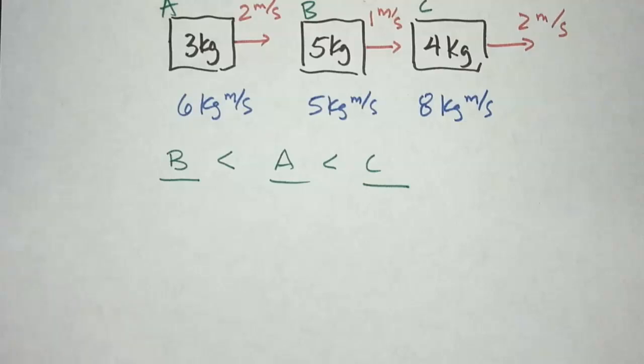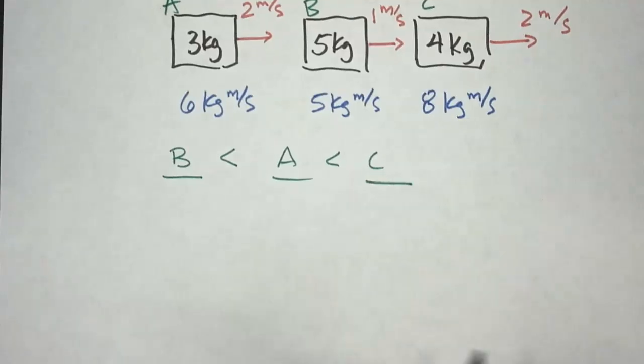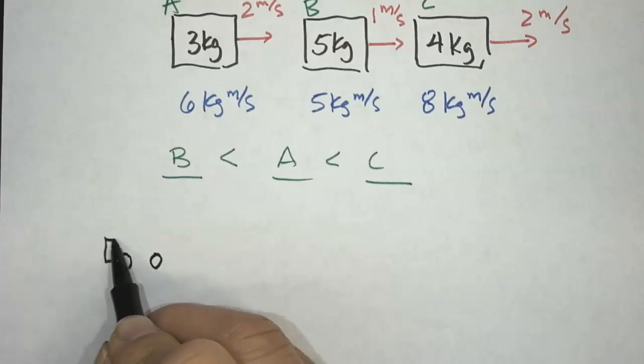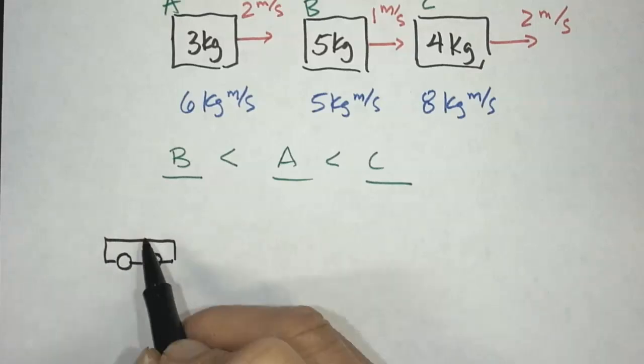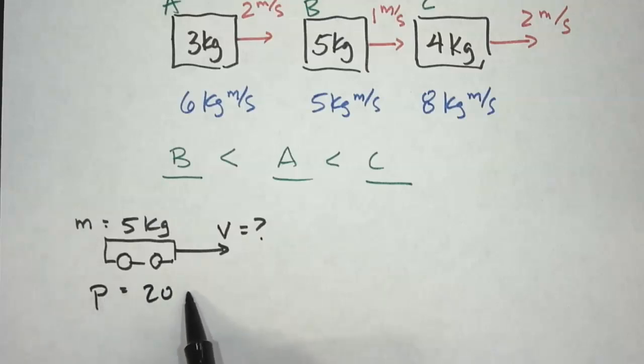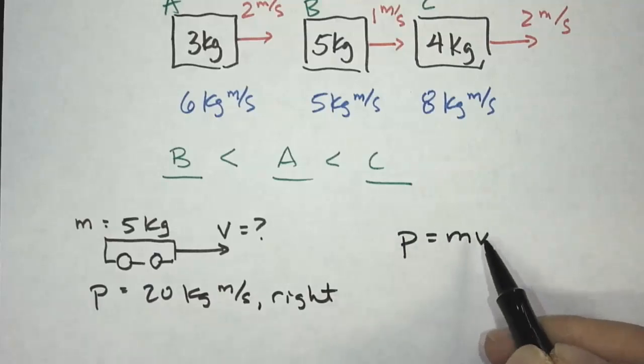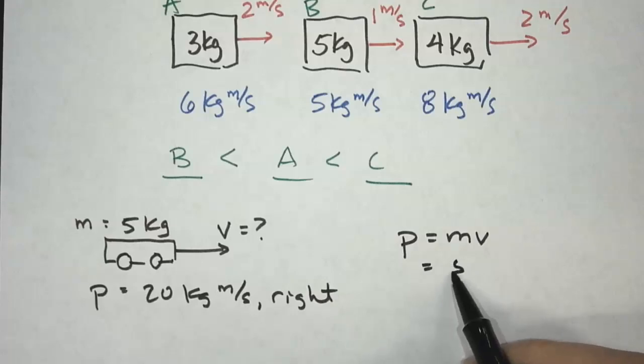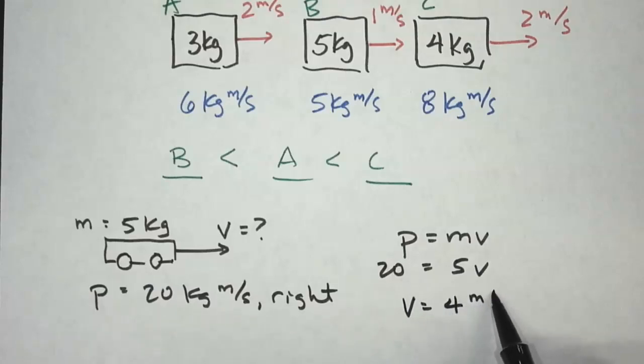Right, now sometimes we're given the momentum, and we're asked to calculate the velocity. So here we have a cart, and this cart has a mass of 5 kilograms. And we are looking for its velocity. We know that its momentum is 20 kilograms meters per second to the right. And so now we're trying to figure out what the velocity is. We know P equals MV. M is 5, P is 20, times V. So V, we're going to divide 5 on both sides. We get 4 meters per second, and it's going to be towards the right.